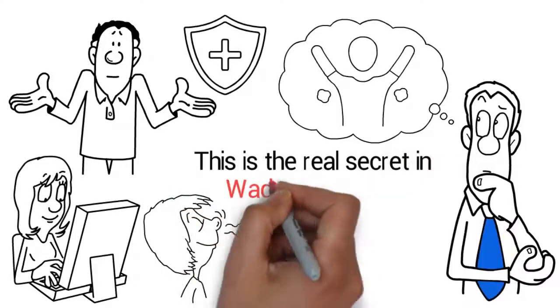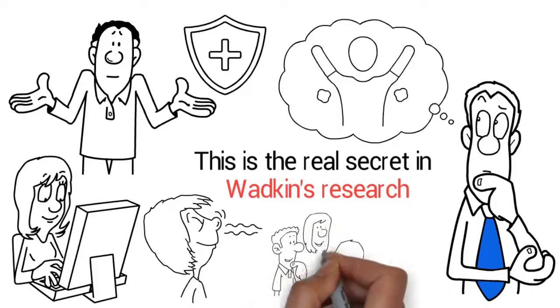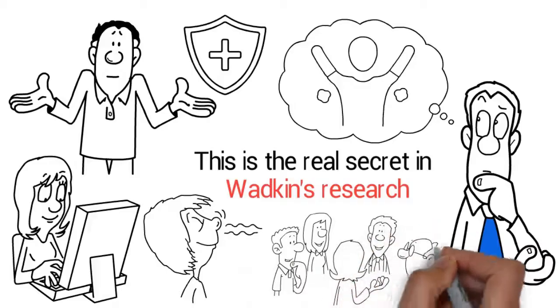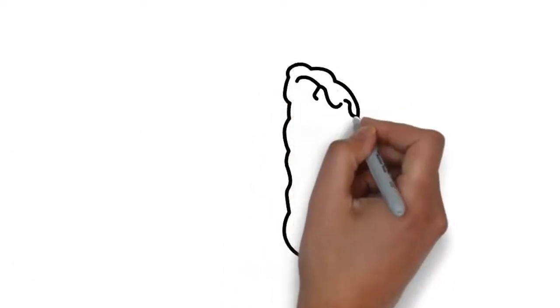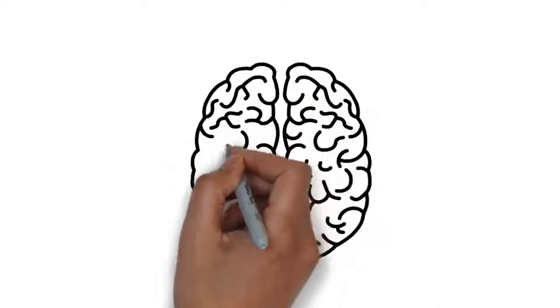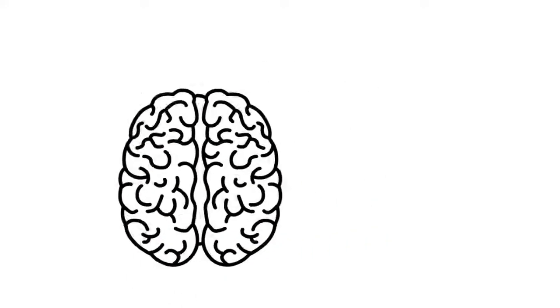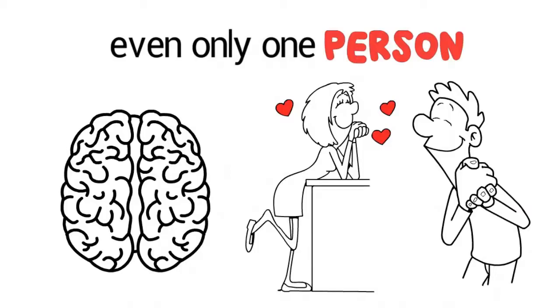This is the real secret in Wadkin's research. Of all the millions of people we meet throughout our lives, of all the coincidences in our path, and of all the choices we make, our brain and body are equipped with an amazing ability to direct our passion towards a particular type of people, even only one person, that may have been created just for us.